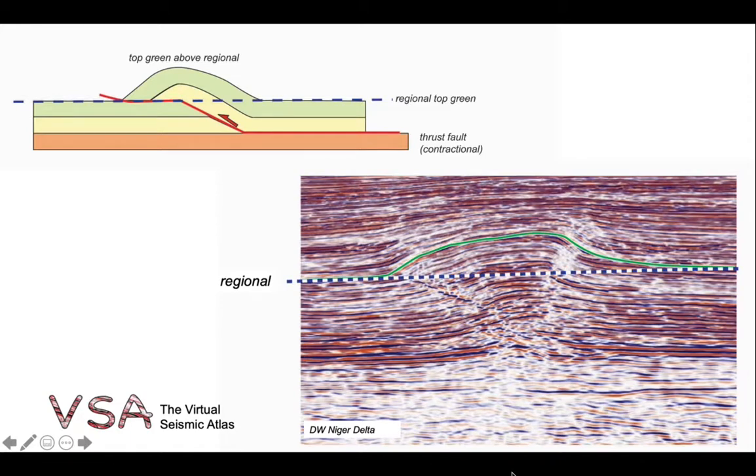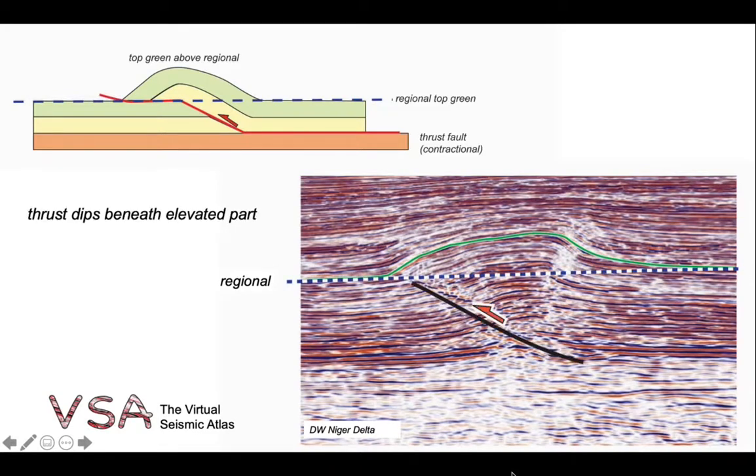And the green horizon is being elevated above its regional. Therefore, we would deduce that the thrust which has accommodated this uplift will be inclined beneath the elevated part. Of course, we don't know whether the thrust lies on this side of the structure or that one. Though, given the data, it's more likely that the down-to-the-right interpretation is the more plausible.